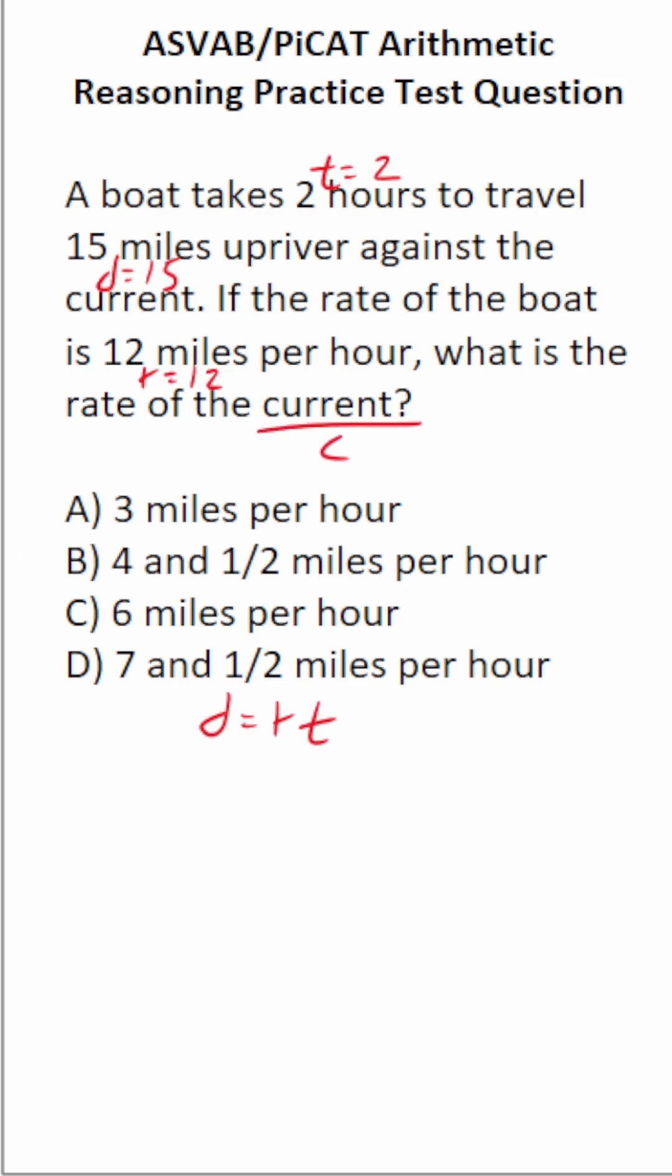Let's talk about how we're going to make that modification. Distance is not going to change. This current is going to affect the rate at which the boat travels. In fact, it's going to slow the rate of the boat down. So to represent that algebraically, we're going to do rate minus current because that current is slowing down the rate of the boat times time. So there's our new modified formula that we're going to be solving for C.